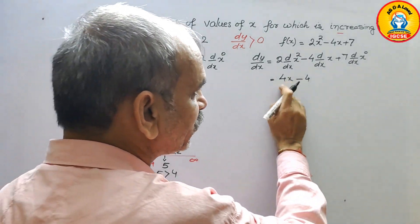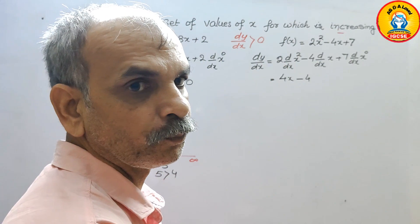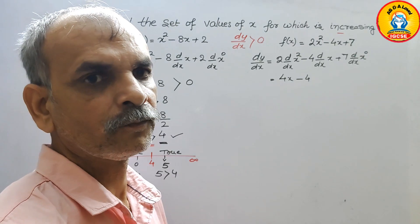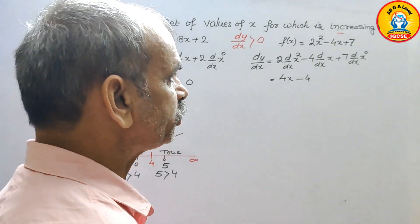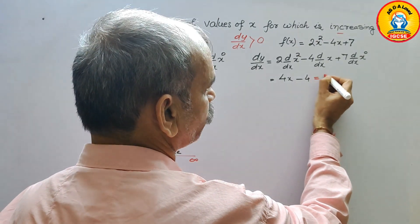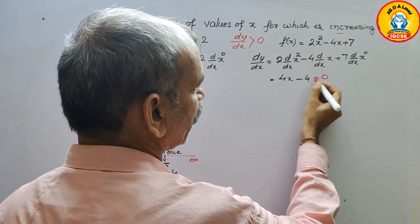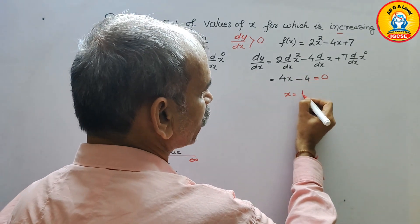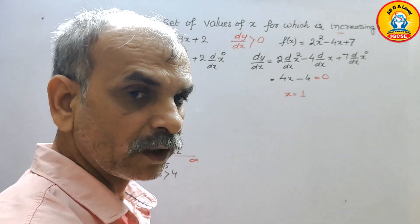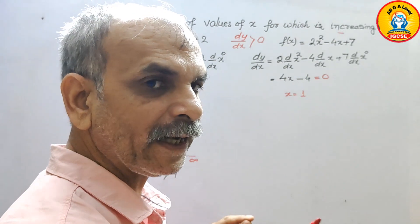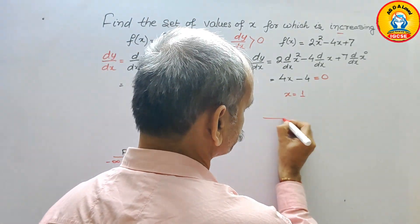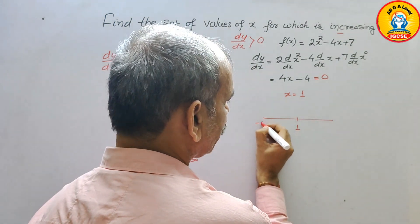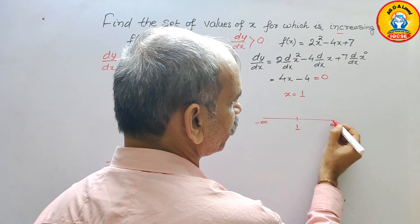We set 4x - 4 = 0 to find the critical point. Therefore x = 4/4, which equals 1. Now we draw a number line with 1 placed on it, minus infinity to the left and infinity to the right.